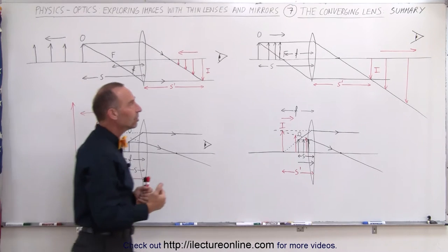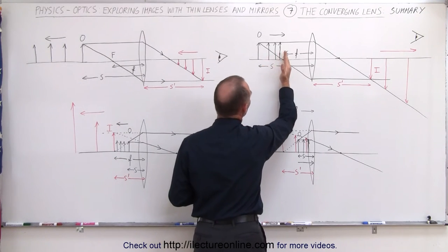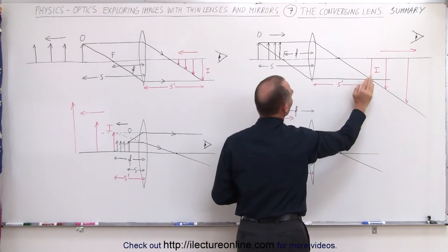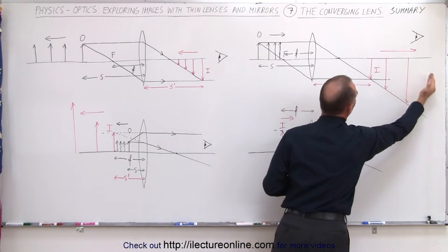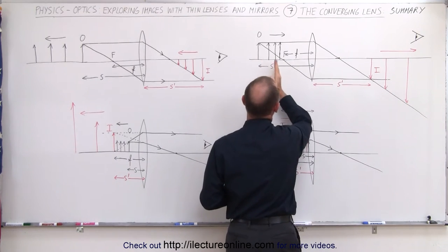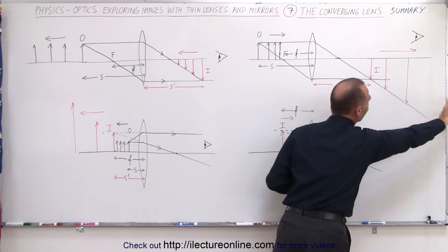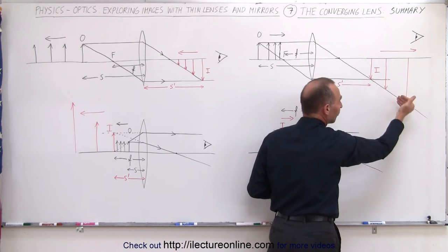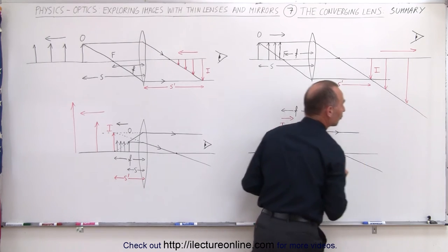In the second condition, we began to move the object closer and closer to the focal point instead of farther away. The image began to form farther and farther away from the lens. In the limit, as the object reached the focal point, the image would form at infinity. It's still a real image — inverted, and it becomes larger and larger as the image goes farther out.